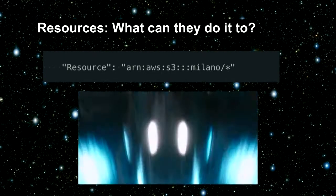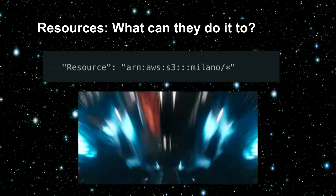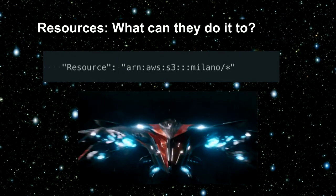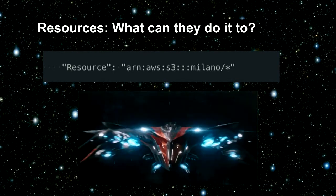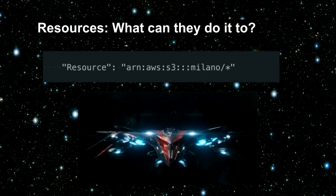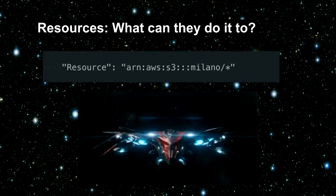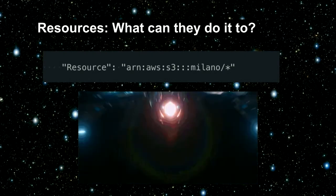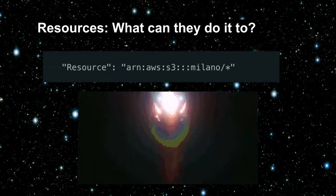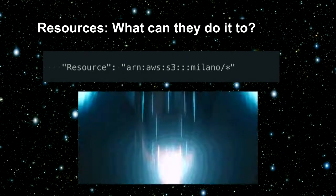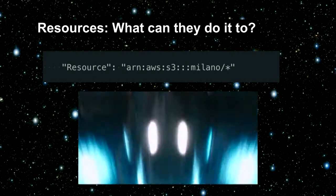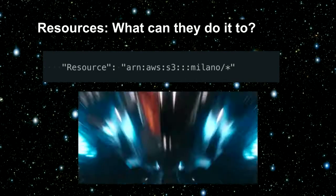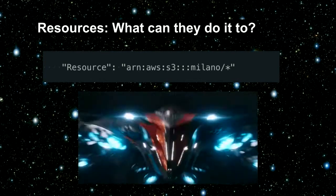And finally, resources. This is the thing you can do your actions on. In our case, we've taken the Milano — the Guardians of the Galaxy ship — and we've made it an S3 bucket. They always take these ARN formats — Amazon Resource Name — so you've got ARN, AWS, the type of service, your account, your user, et cetera. By the way, the Milano is named after Alyssa Milano, who is apparently Starlord's childhood crush.